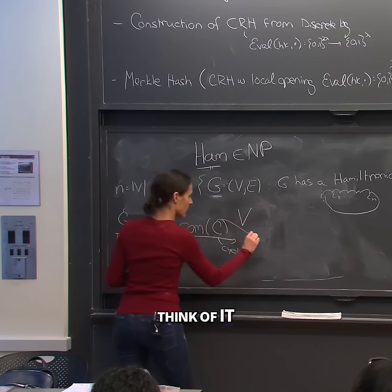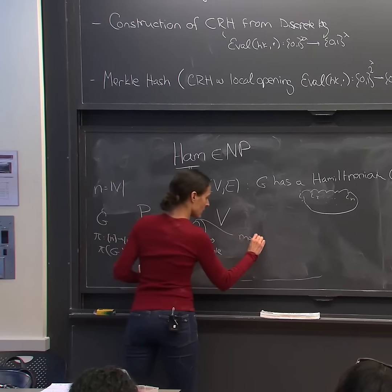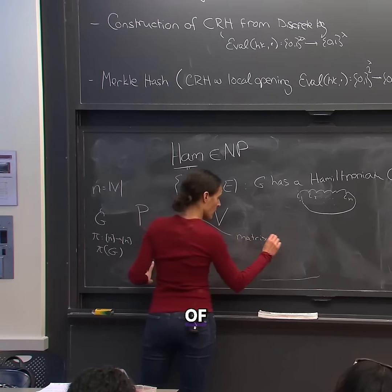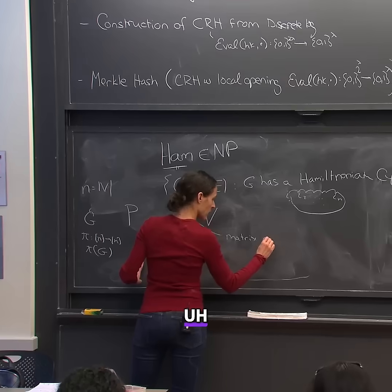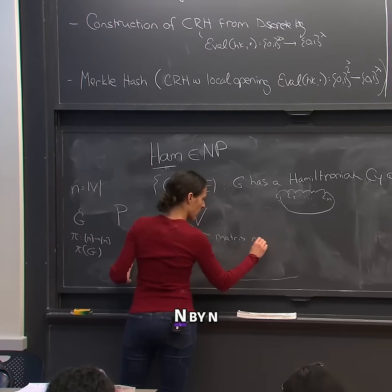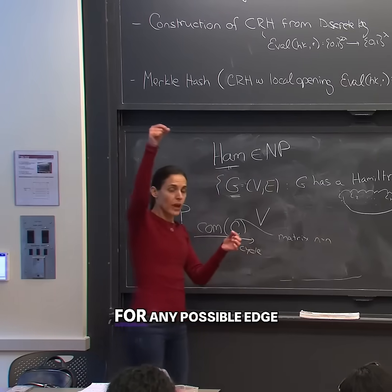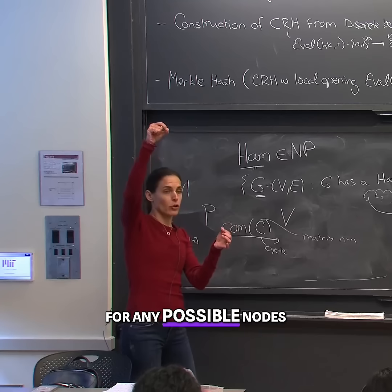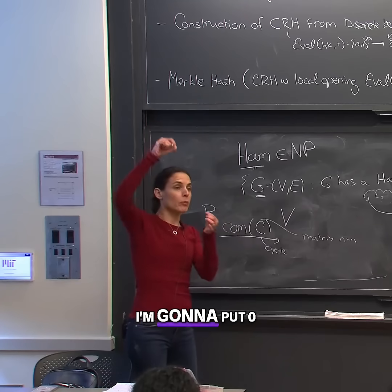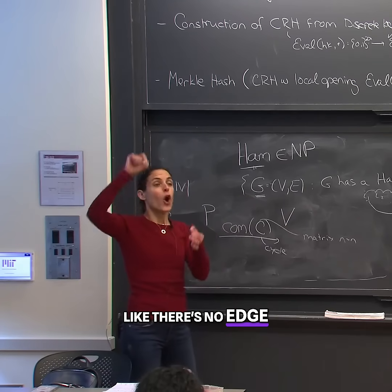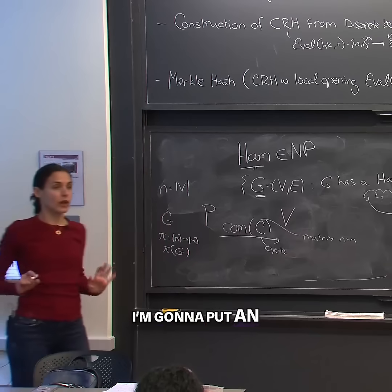So this is like, think of it's a matrix of n by n. For any possible edge, for any possible node i and j, I'm gonna put 0, like there's no edge. Only if it's in the cycle I'm gonna put an edge there.